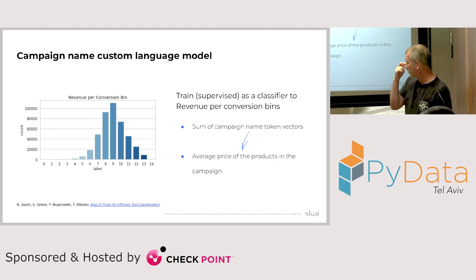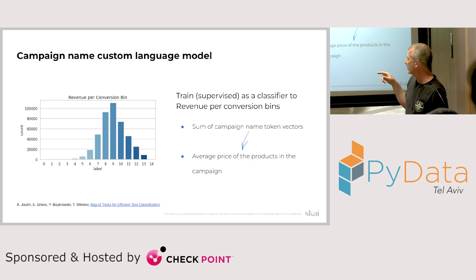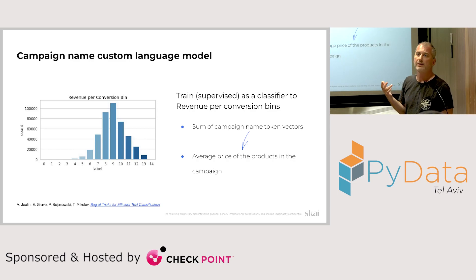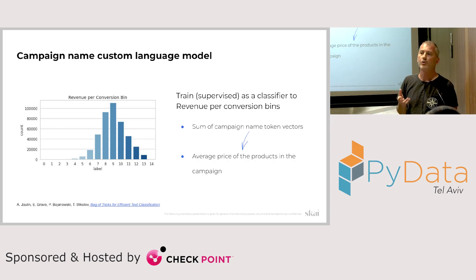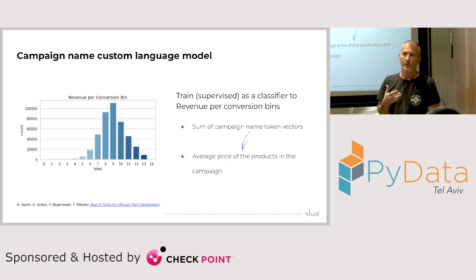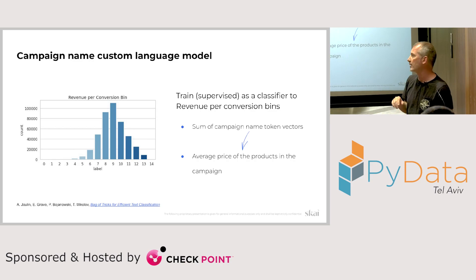Another nice thing FastText gives us is the ability to train with supervision and give it an objective. The task we gave it was to predict what we call revenue per conversion at the campaign level — essentially the price of the product being sold by that campaign. So we're inserting into the dense representation some notion of what the campaign is selling and how expensive the product is. We have a feeling that people take more time when buying higher-priced products, so we expect that to impact the latency prediction.